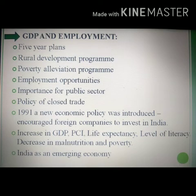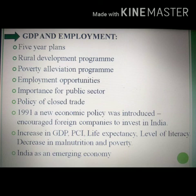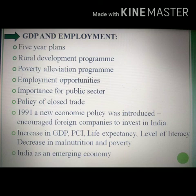The next concept is the developmental path based on GDP and employment. After independence, we made certain policies and programs for the development of our country. In 1950 we started the five-year plans, where each plan gave importance to different sectors: the first plan dealt with agriculture, the second with industry, the third with creating employment opportunities, and the fourth with poverty alleviation through rural development programs. In early days we followed a closed economy, encouraging only domestic industries with no foreign investment. The sixth and seventh five-year plans gave more importance to development of the public sector — government-owned industries like power generation, railways, telecom, and LPG suppliers.